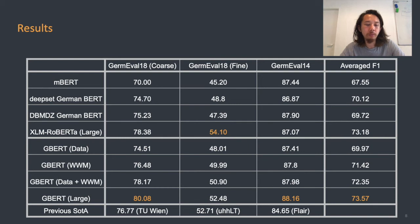Of the base-sized models, GBERT data plus whole-word masking reaches an averaged F1 of 72.35, which is better than all previous base-sized BERT models handling German, as well as the other base GBERT models we trained.